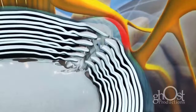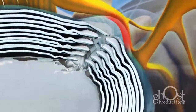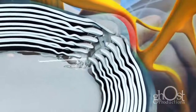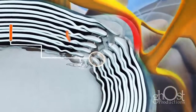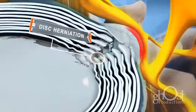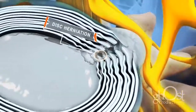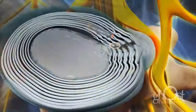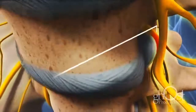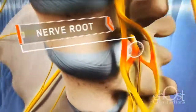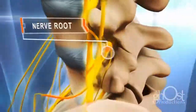In the case of a lumbar herniated disc, the weak spot in the annulus fibrosis is directly underneath the spinal nerve root, so a herniation in this area can put direct pressure on the nerve. The nerve root extends down the leg.